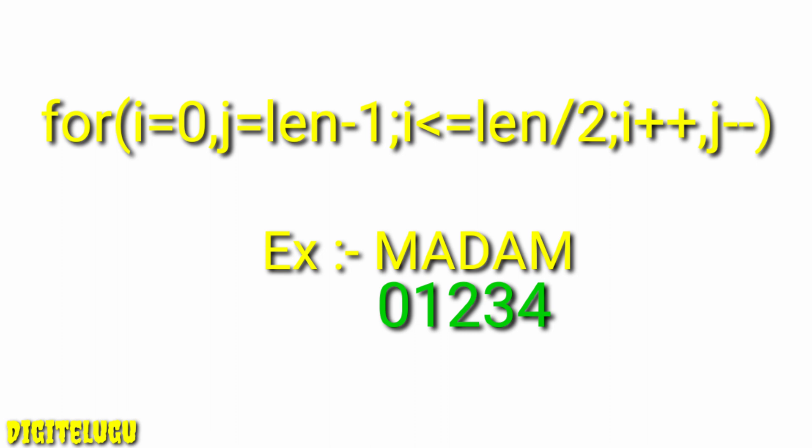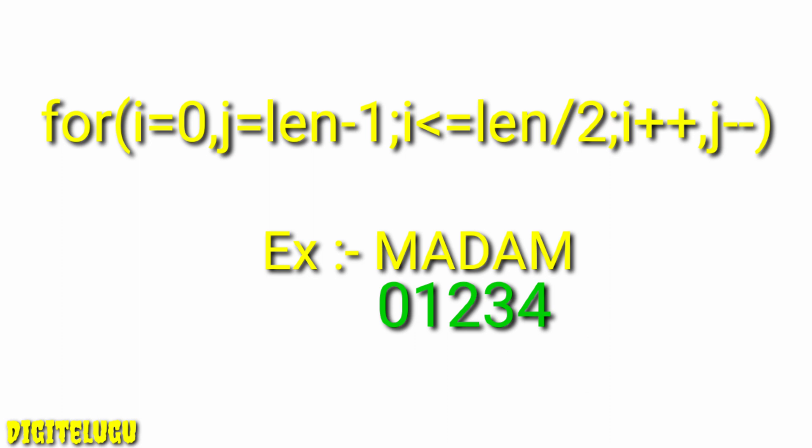i and j variables are already declared as integer data type. i is equal to 0 — i starts at 0 in the for loop. For 'madam': 0=m, 1=a, 2=d, 3=a, 4=m, i starts at 0. Next, j is equal to length minus 1. Total length is 5, so j = length - 1 = 4. i starts at 0 (outside/left), j starts at 4 (inside/right — opposite side).